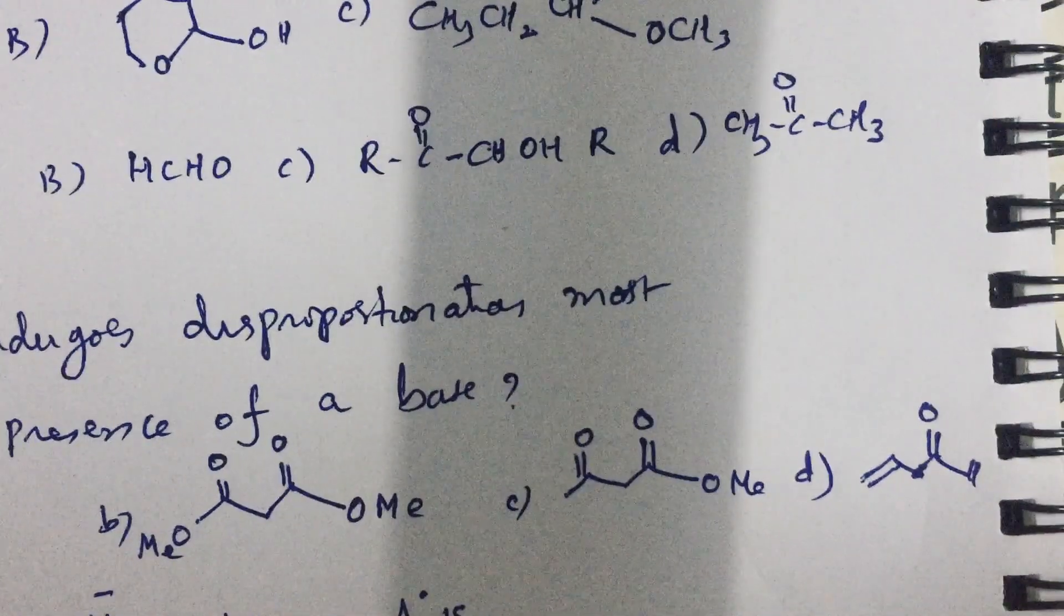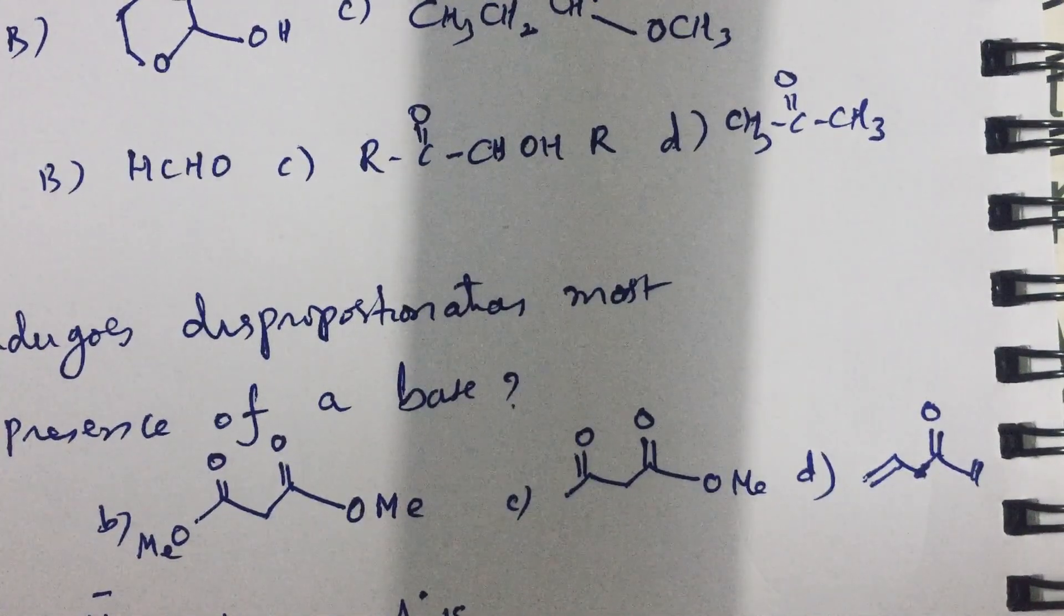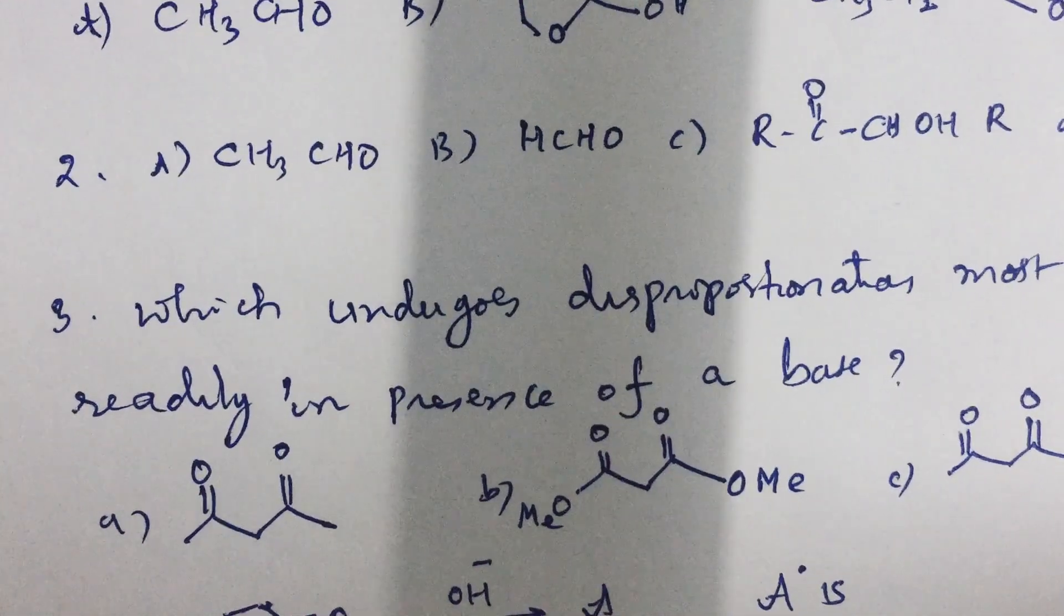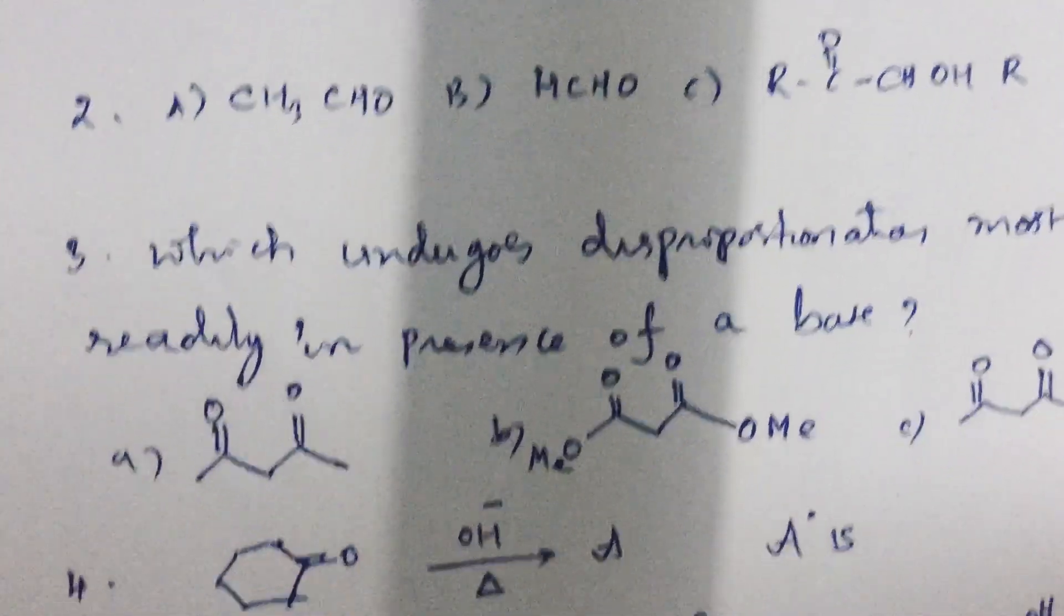In C also minimized by one methoxy group. In D, the positive charge on carbonyl carbon is greatly minimized due to resonance. So, of these four options, A appears to be the best to undergo disproportionation.